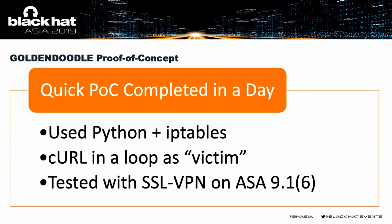I made a proof of concept in Python using IPtables — not a full realistic exploit scenario, but using curl as the victim running in a loop and redirecting traffic through IPtables to my script. I tested this on the SSL VPN interface from an ASA running version 9.1(6), and it did in fact work.